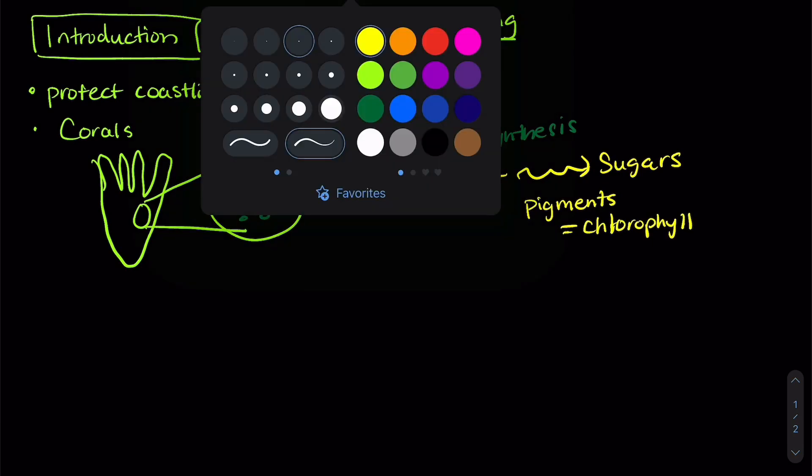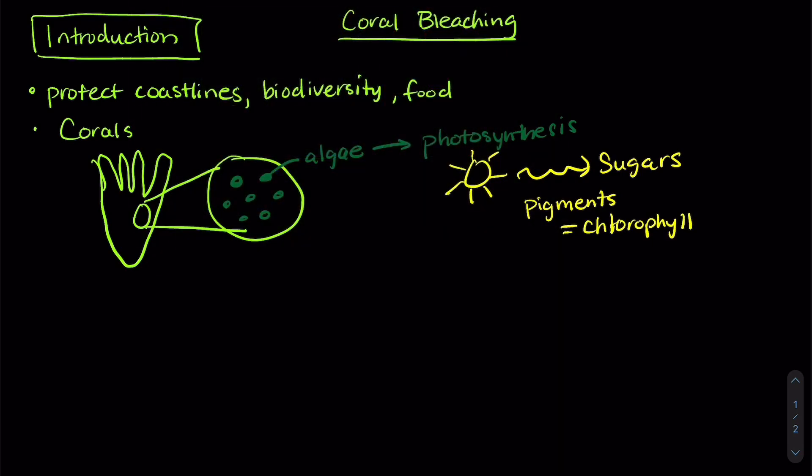Now the really awesome thing about corals and the algae is that the algae actually take these sugars and share them with the coral. And this is a relationship called symbiosis. So the coral actually gets the sugars that the algae produce and the algae get a safe place to live.